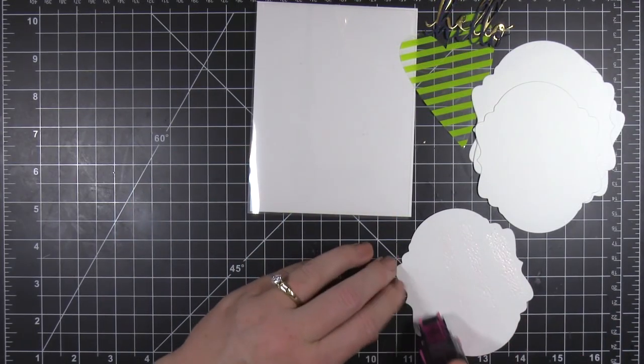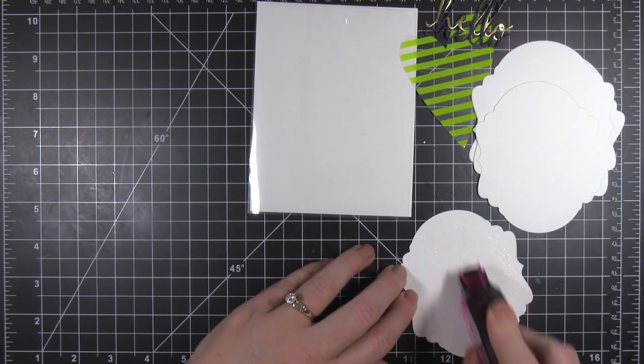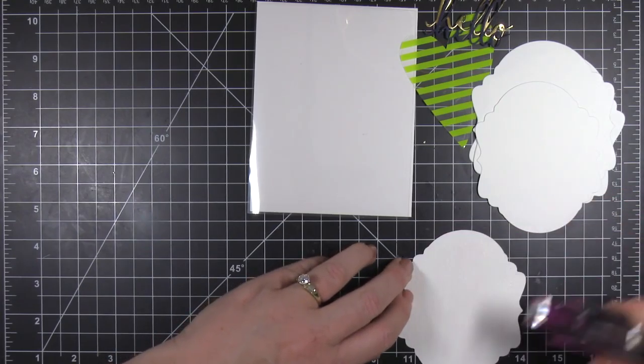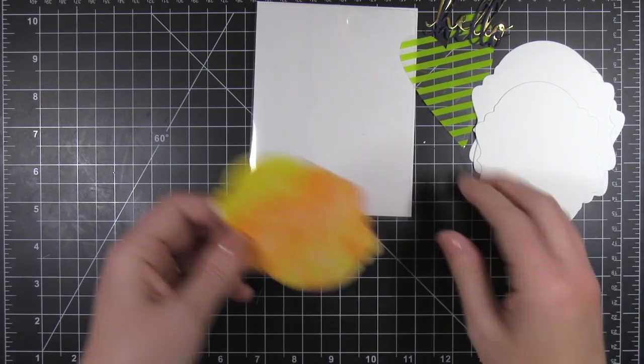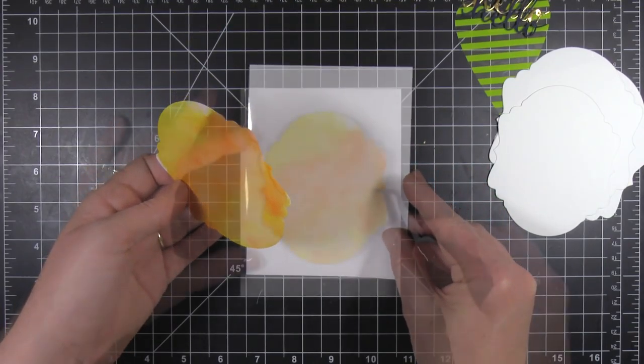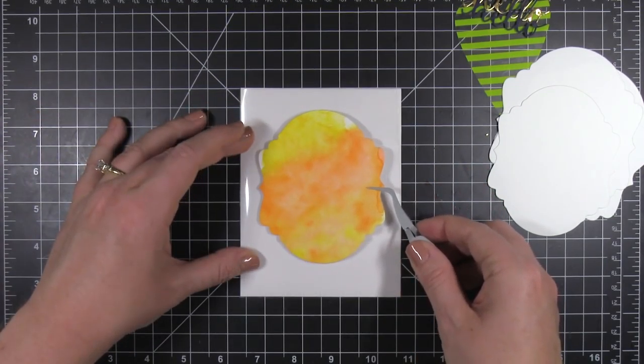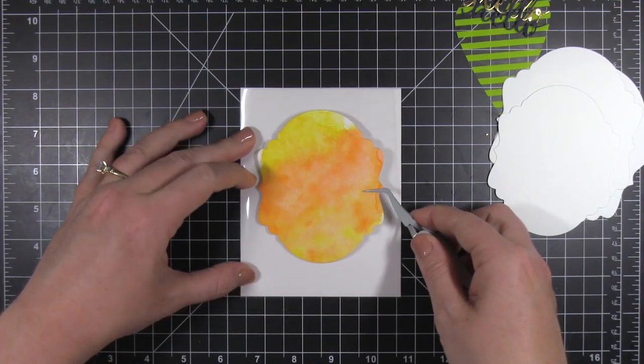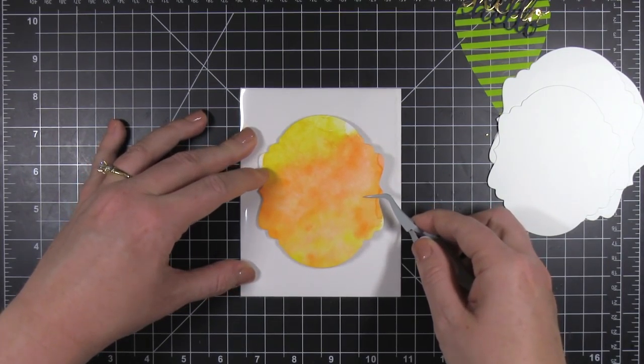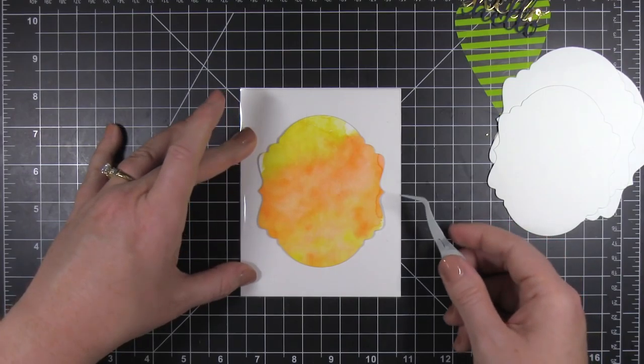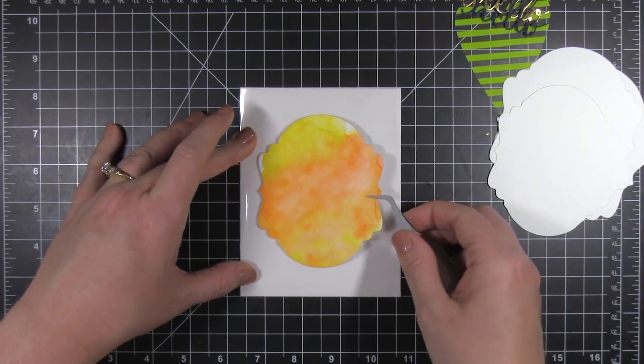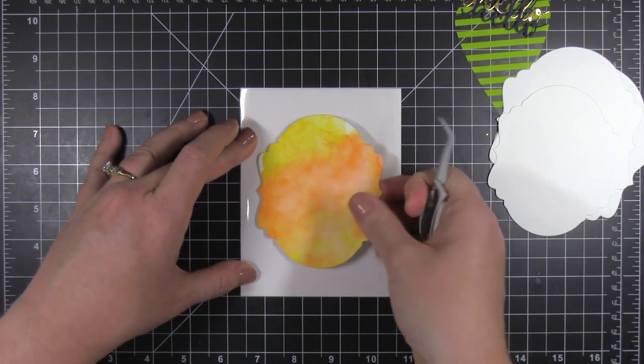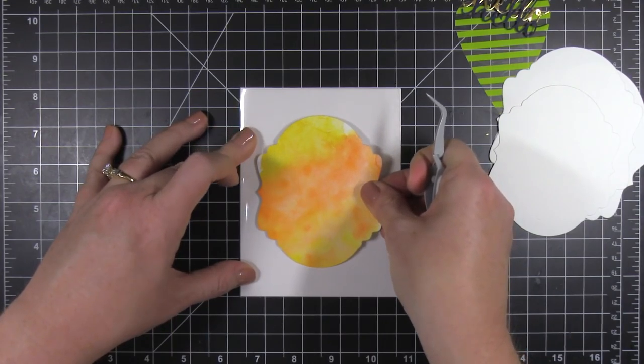And I'm going to start by adding some tape runner adhesive to that watercolor piece. And then I am going to position it onto the front of my acetate card here. Now I'm going to use my grid mat to make sure that I get this all lined up. And I use my tweezers to keep my fingers out of the way, but I had to edit quite a bit of this out right here. I was having some commitment issues with placing this piece on the front of my card today. It took me quite a while to place this down.